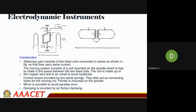Coming to the electrodynamometer instruments. The stationary part consists of two fixed coils connected in series, so that current flowing through the first fixed coil always flows through the second. The moving system consists of a coil mounted on a spindle, which is free to rotate in the space between the two fixed coils. The coil is made of thin copper wire and is air-cored to avoid hysteresis loss, which is the main loss to consider in this instrument.